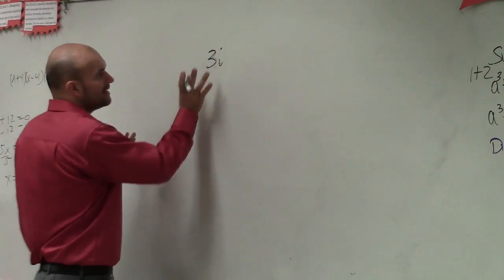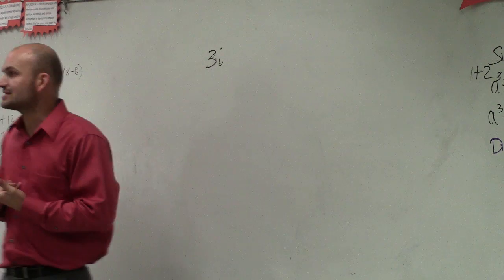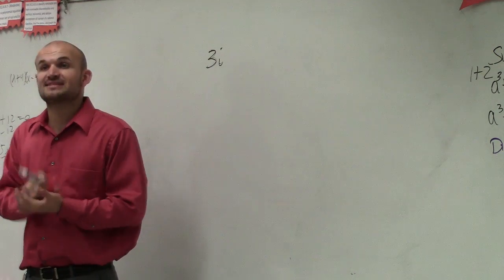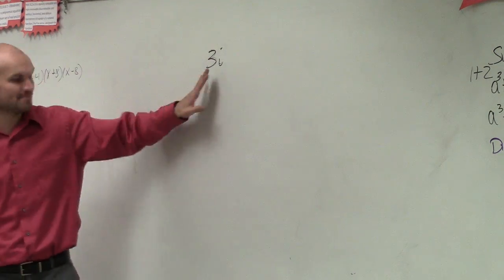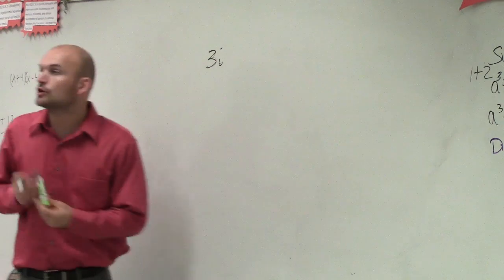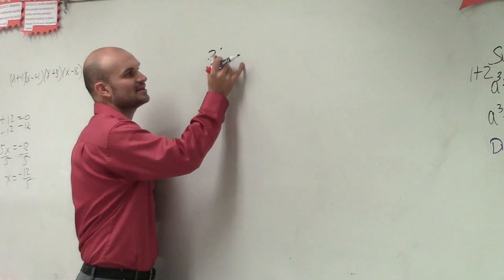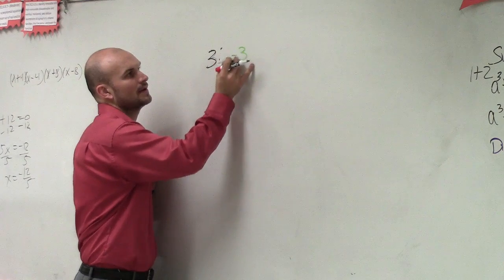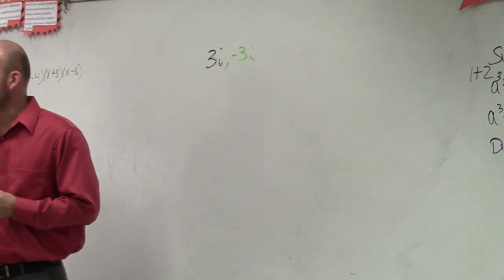First of all, remember the complex conjugate here. And that's what we went down last class where we talked about. Whenever I'm given 3i, you know you need to make sure for any complex number, you also produce the opposite, right?